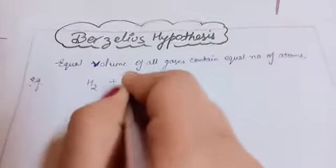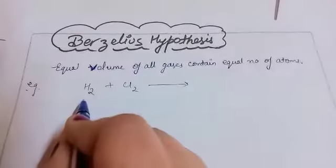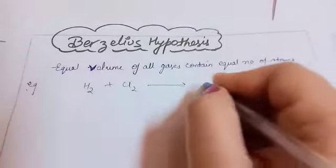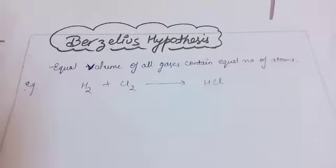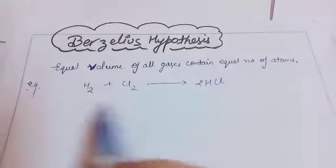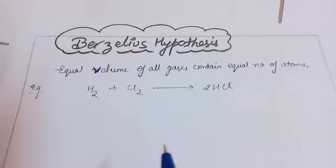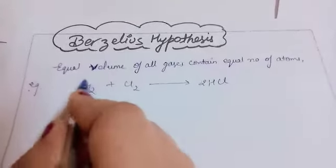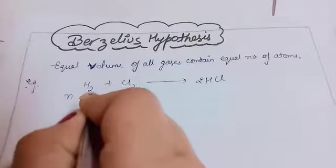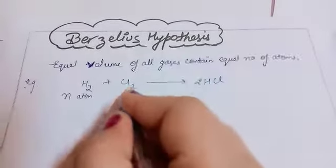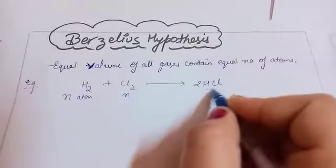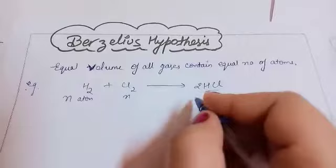We'll take a very general example. Hydrogen plus chlorine — both exist as diatomic molecules — react to form hydrochloric acid. Balancing this to follow the law of conservation of mass gives: H₂ + Cl₂ → 2HCl. Now let's count the number of atoms in each component. Suppose the number of atoms is N.